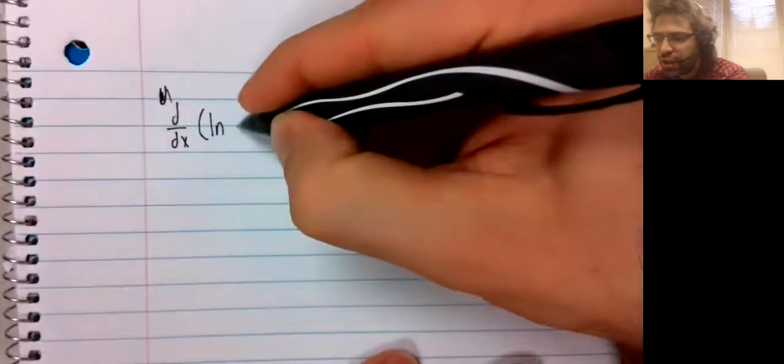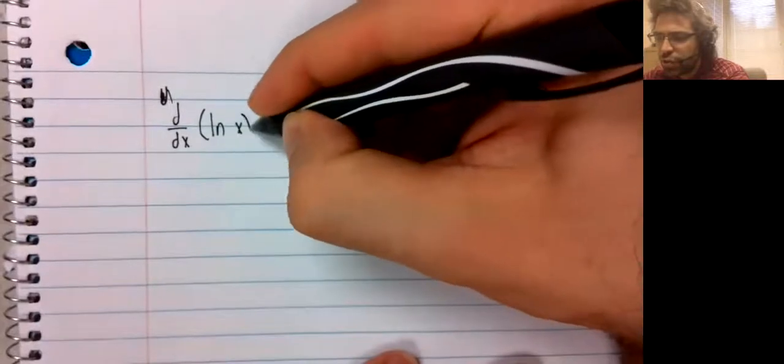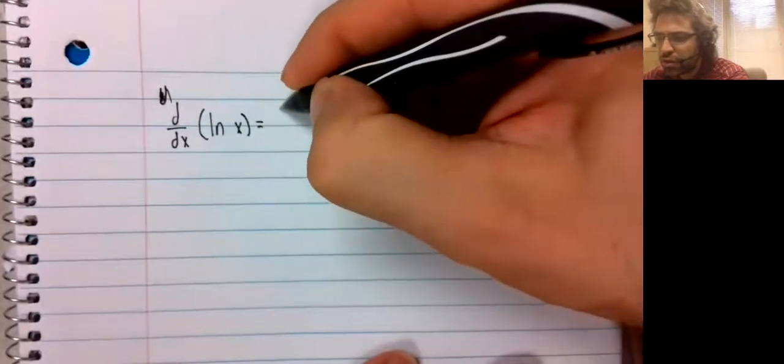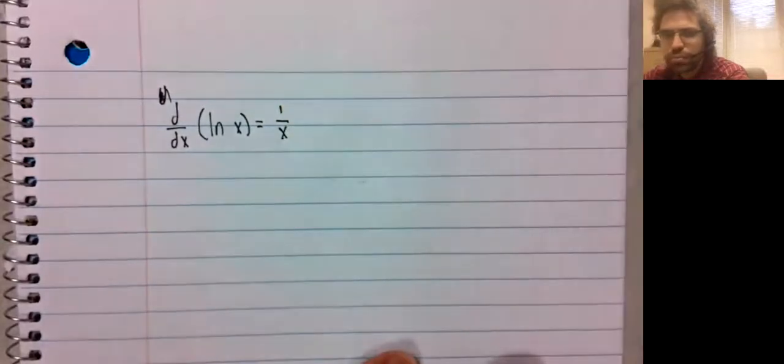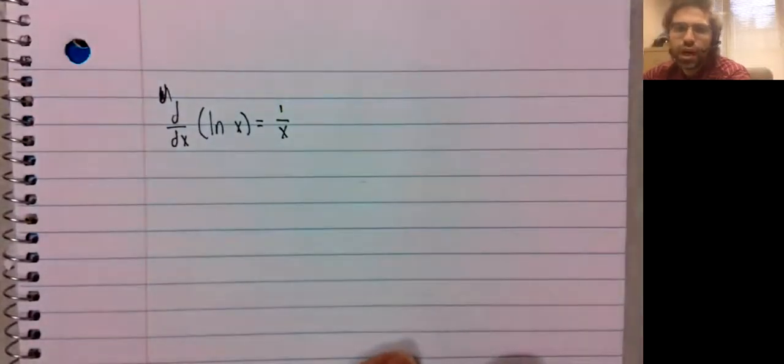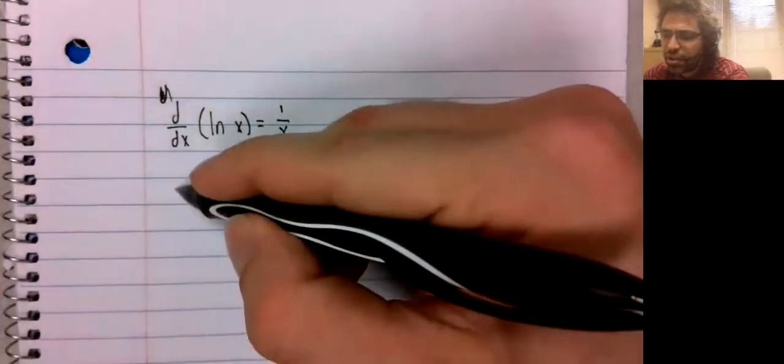The derivative of the natural logarithm of x is 1 divided by x.